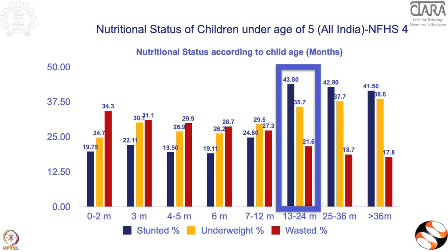Coming to NFHS 4 data — NFHS is the National Family Health Survey, a national level survey conducted every four to five years. Recently NFHS 5 data just came out. So far we had about 22 state and union territory data from NFHS 5, which was conducted around November 2019. Since it just came out, I don't have a lot of slides on NFHS 5 yet, but I will have them by the third or fourth session.